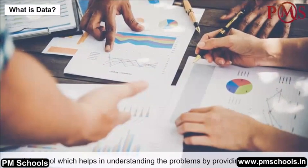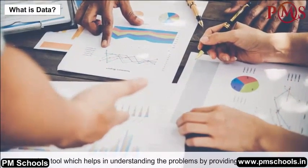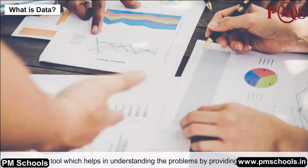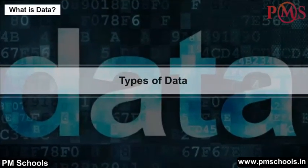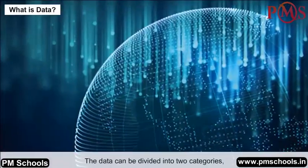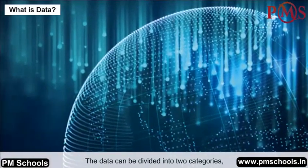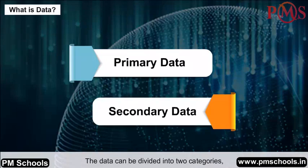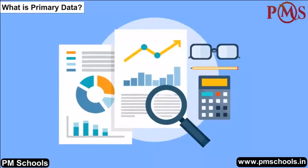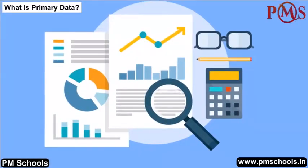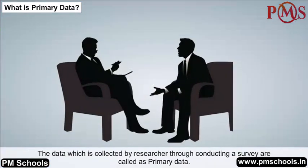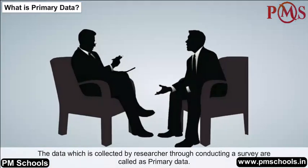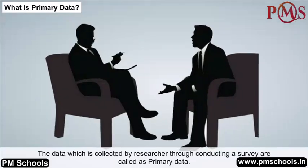Data is a tool which helps in understanding problems by providing information. Types of Data: Data can be divided into two categories — primary data and secondary data. Primary data is the data which is collected by a researcher through conducting a survey.